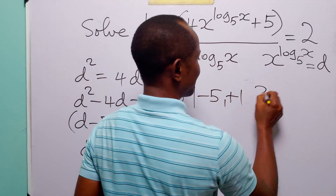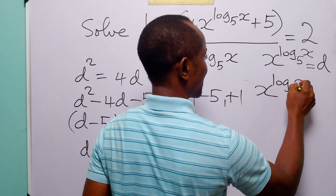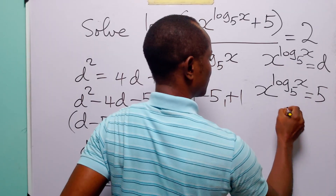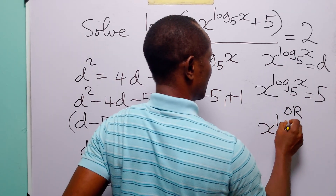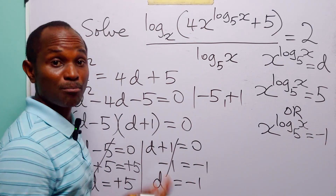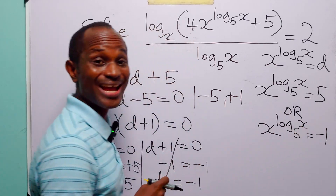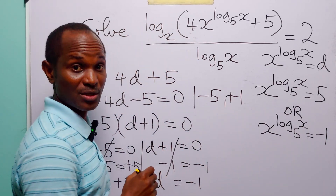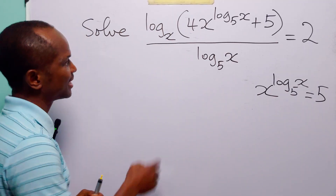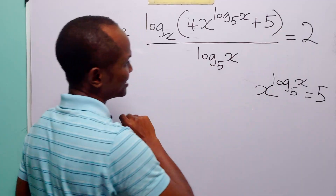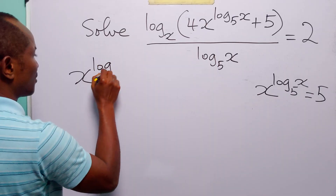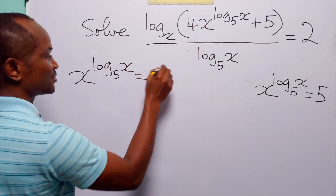So we have two values for d: plus 5 and minus 1. This means either x to the power log base 5 of x equals 5, or x to the power log base 5 of x equals minus 1. But we know that there is no real value of x that is going to satisfy this second equation, so this equation is unacceptable. Finally, we have reduced this original equation to the simpler equation: x to the power log base 5 of x equals 5.